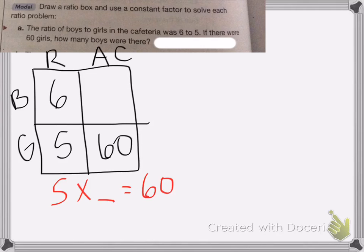So in this case, I know that 5 times 12 equals 60. But if you didn't know that, again, you can go ahead and divide.